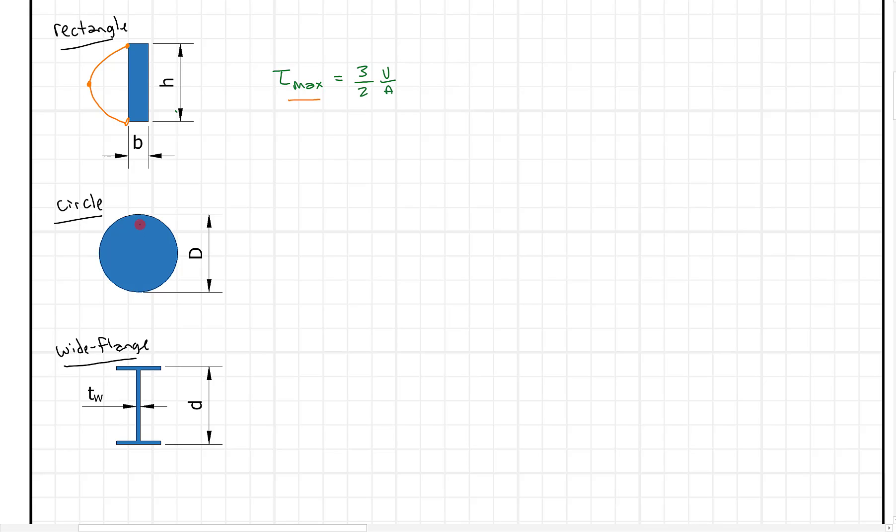Similarly, for a circle, we might have some distribution where it peaks kind of in the middle here. If we have zero at each end, we're going to have some max at the middle. And what that's going to be, it's going to be tau max equals four-thirds V over A. So if we're given shapes when we know the shapes, this gets easier because we can just really solve for this tau max if that's all we're looking at.